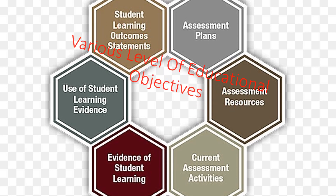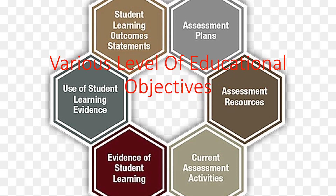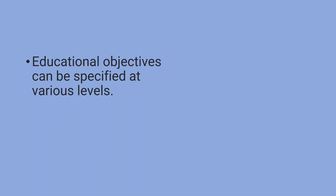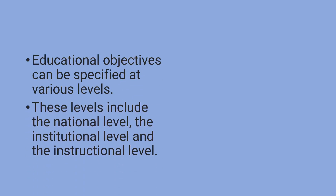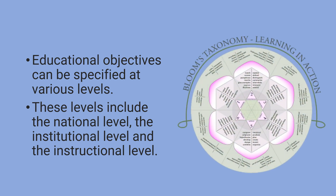Various Levels of Educational Objectives. Educational objectives can be specified at various levels. These levels include the national level, the institutional level, and the instructional level.